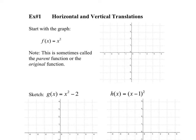Here it says f of x equals x squared, and notice we did not sketch that graph yet, so we'll sketch it. You might remember this graph is a parabola that crosses at (0, 0). When x equals 1, y equals 1. When x equals negative 1, negative 1 squared is 1. And you have a parabola that looks something like this.